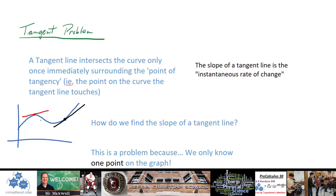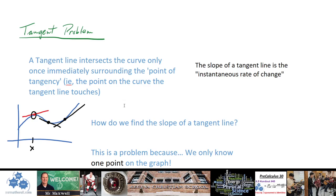A tangent line connects a curve at just one point. Tangent lines have a very important meaning in calculus: just like a secant line is an average rate of change, a tangent line is an instantaneous rate of change. We're not talking about the average between two x-values; we're talking about the instantaneous rate of change at one x-value. The problem is that finding the slope of a tangent line is very difficult using regular algebraic methods because we only have one point, and rise over run requires two points.